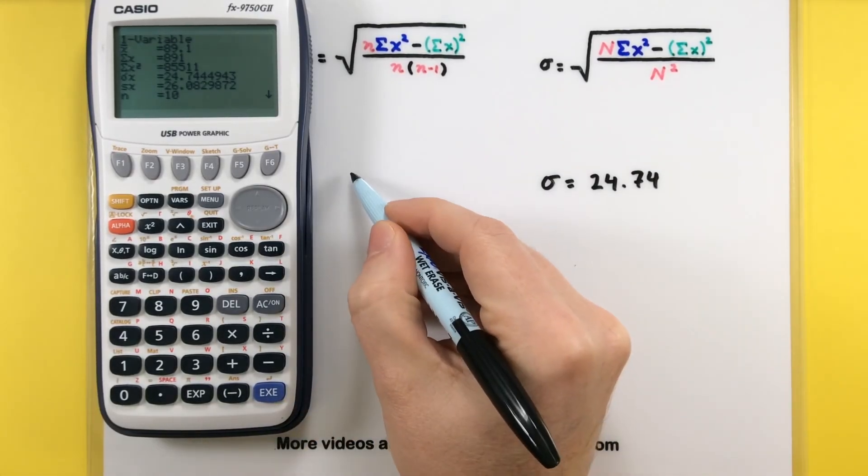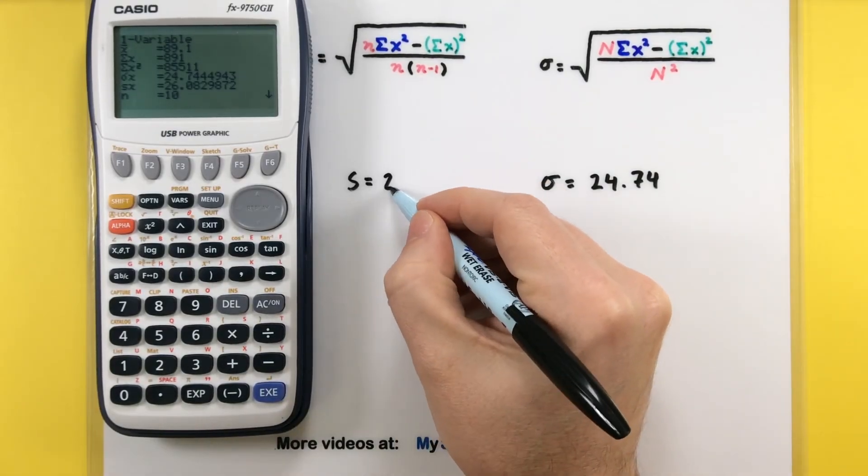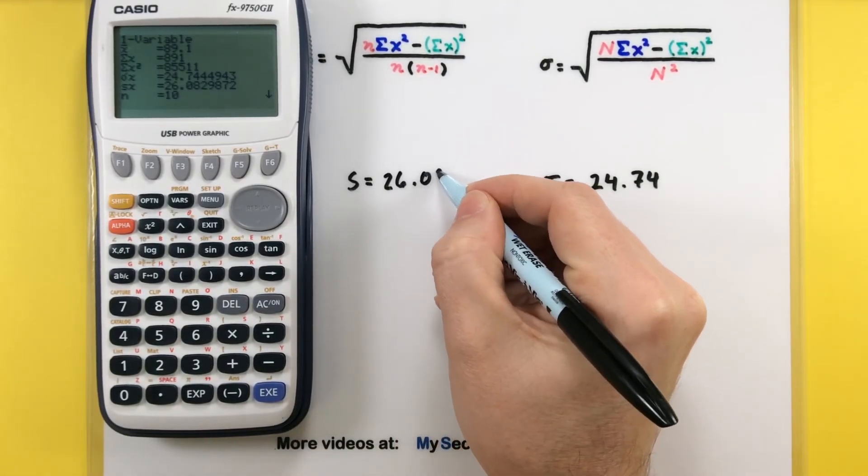The sx assumes the data came from a sample, giving us a standard deviation of 26.08.